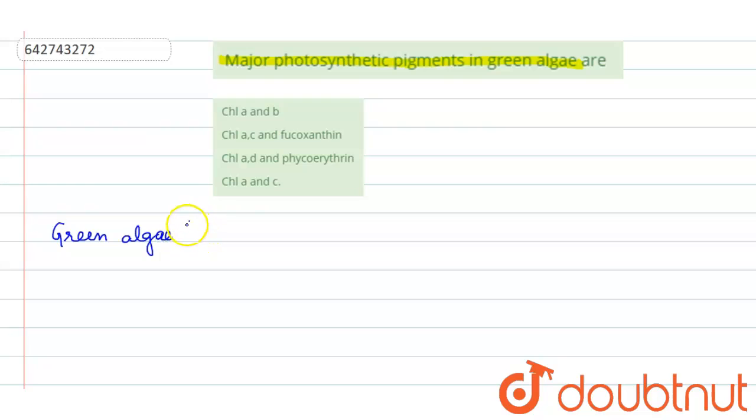Green algae, which are also known as Chlorophyceae. Next is brown algae or Pheophyceae. And last one is the red algae or Rhodophyceae.